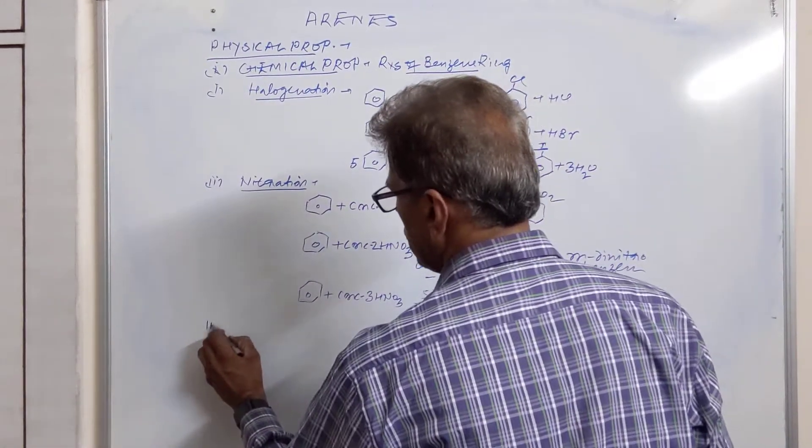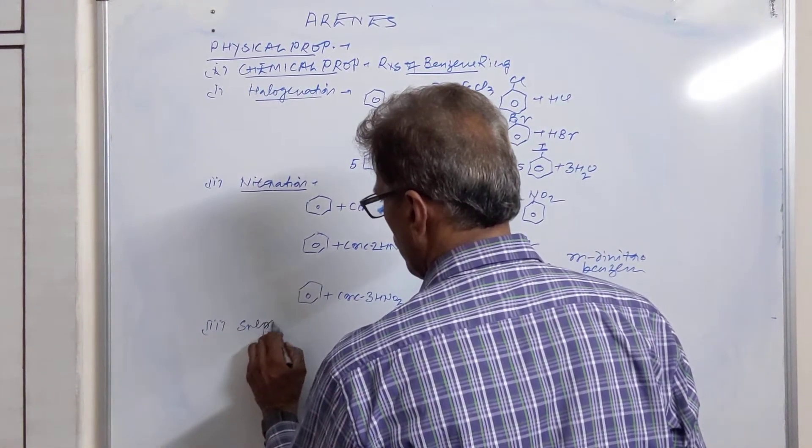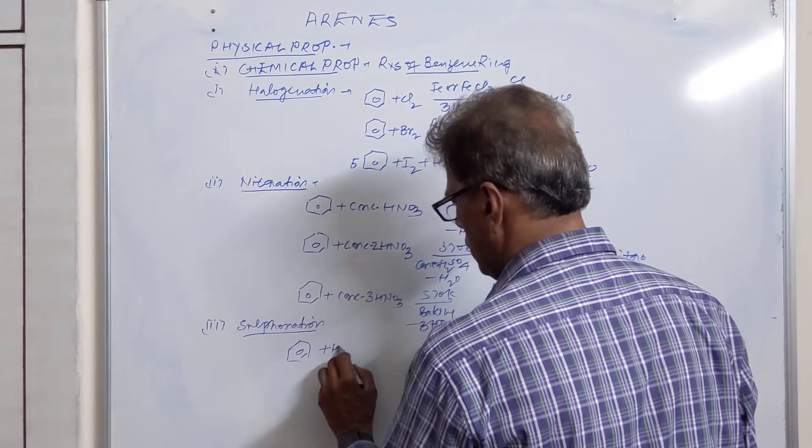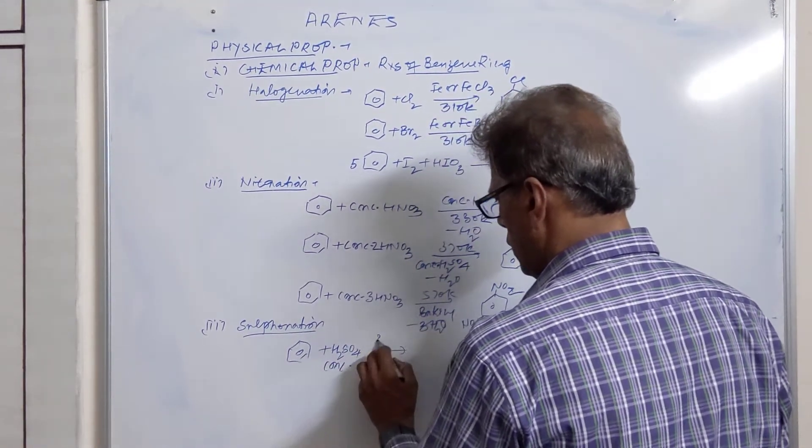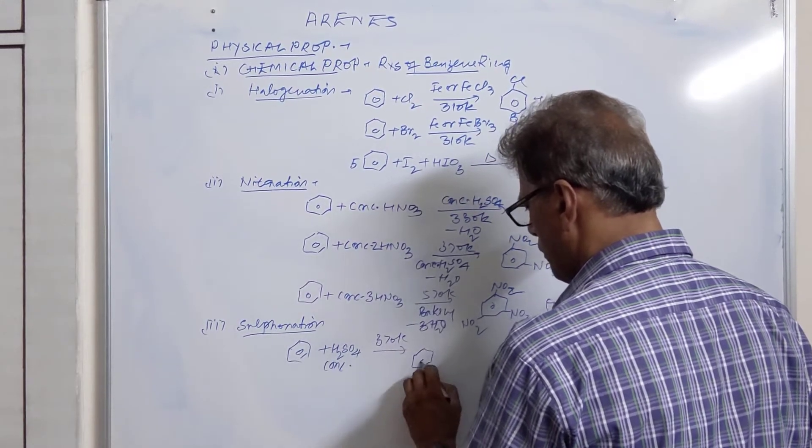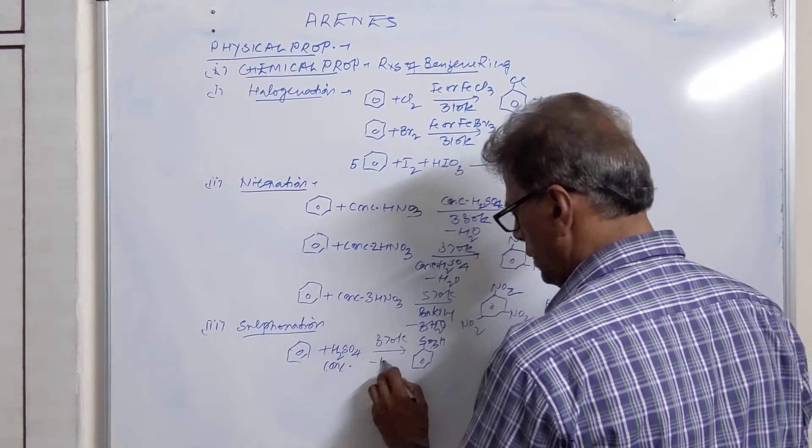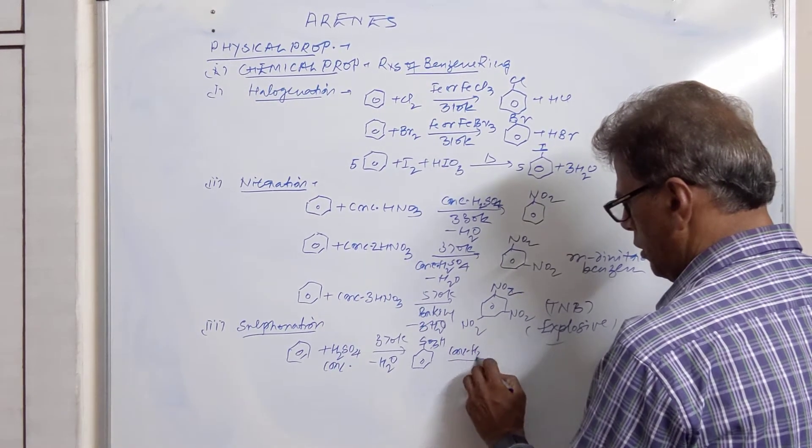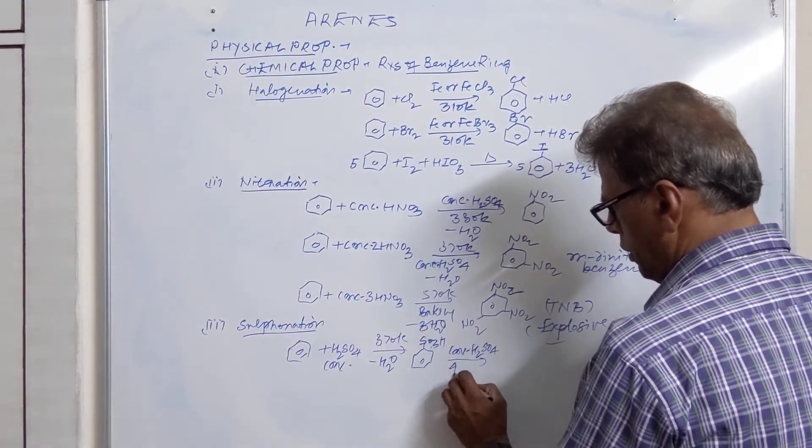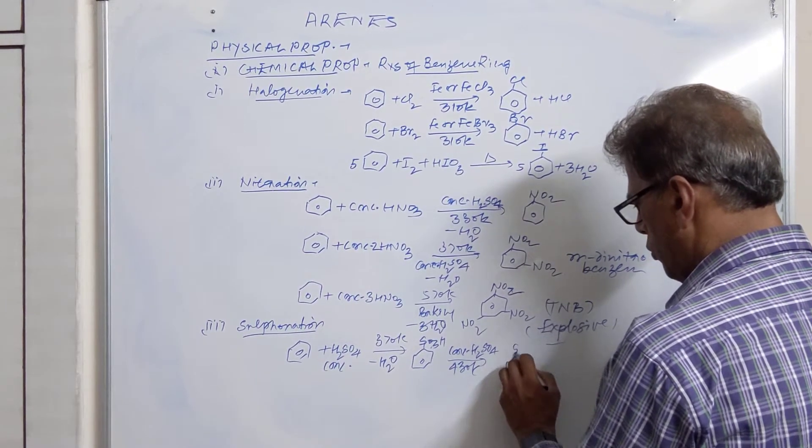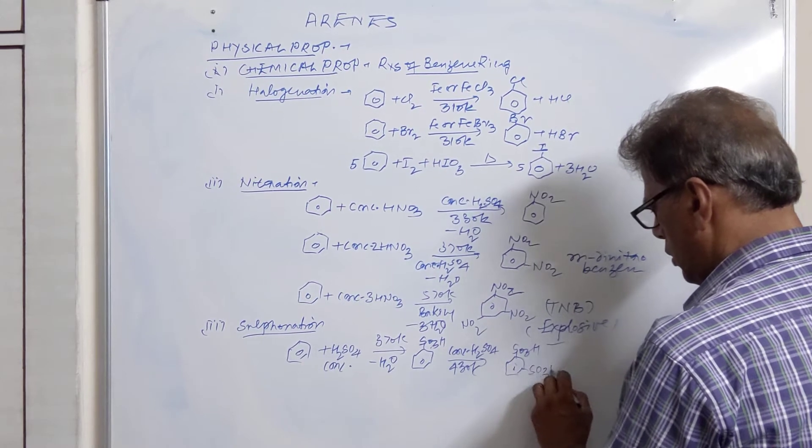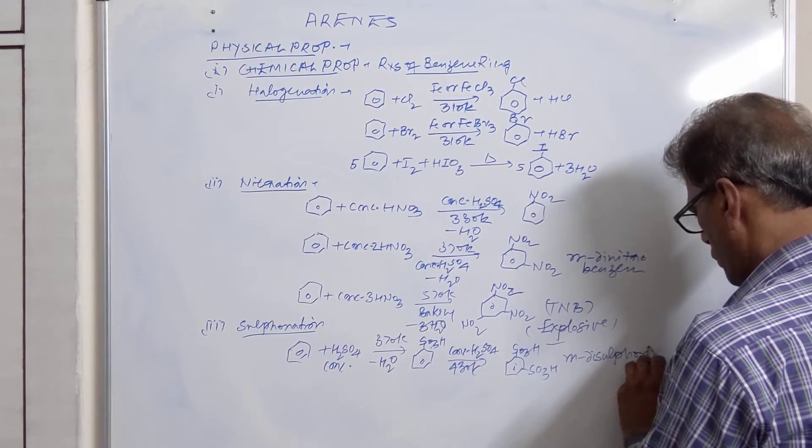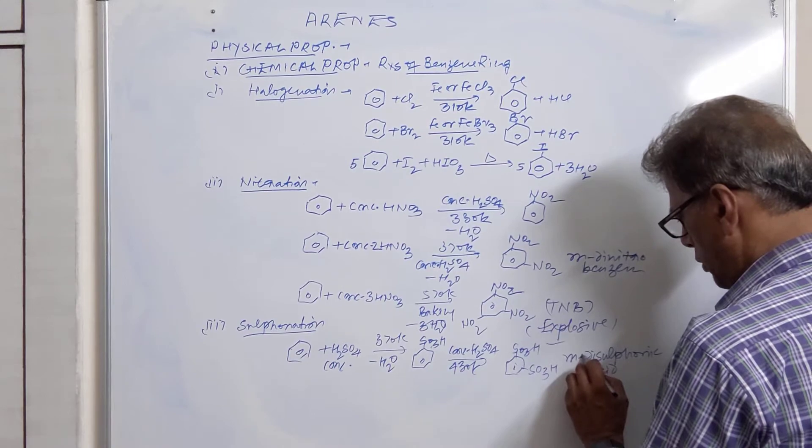Then we have sulfonation. Benzene combines with concentrated H₂SO₄ at 370 Kelvin, producing benzene sulfonic acid. Loss of water takes place. This reaction can further be carried out at high temperature, 430 Kelvin. It will give you meta-benzene disulfonic acid.